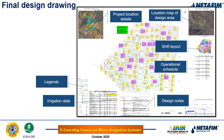The final design drawing should include maximum details for easy understanding: a location map from Google Earth, design notes specifying sub-main and main line diameters, pressure classes of pipes, safety equipment, total pumping head, shift areas, shift flows, irrigation data, operational schedule, and shift layout. Providing all this information makes the drawing easy to interpret for anyone who references it.